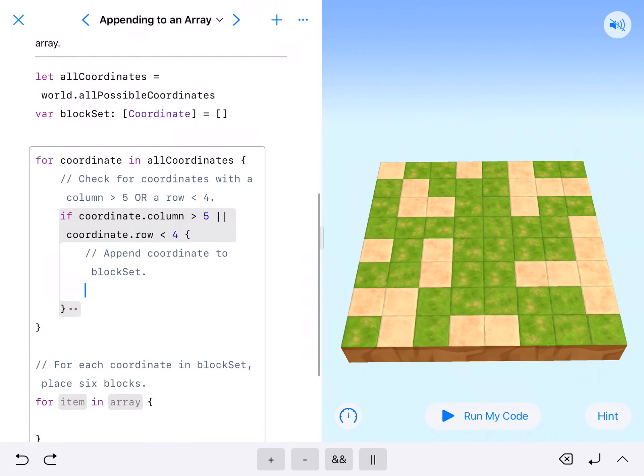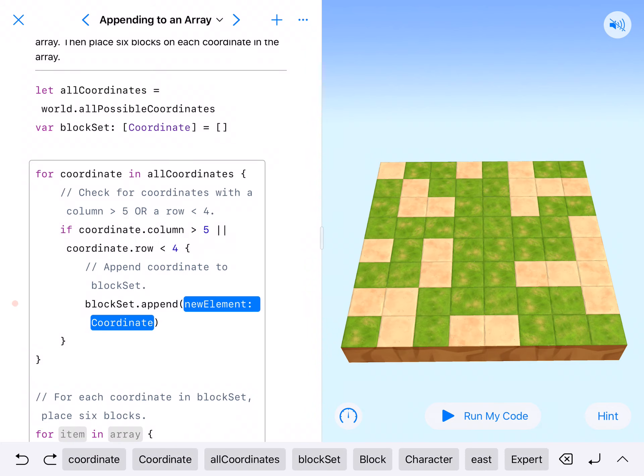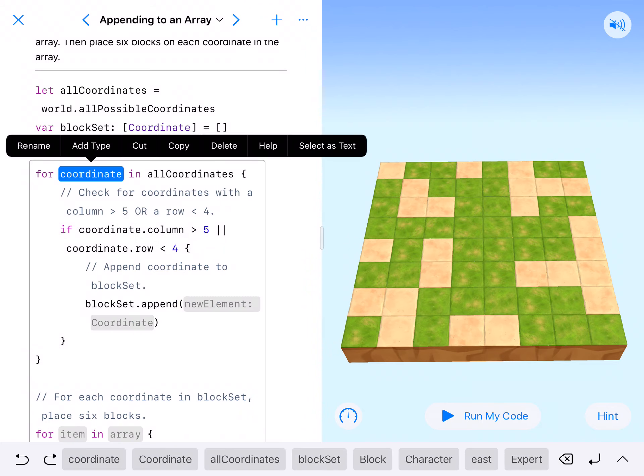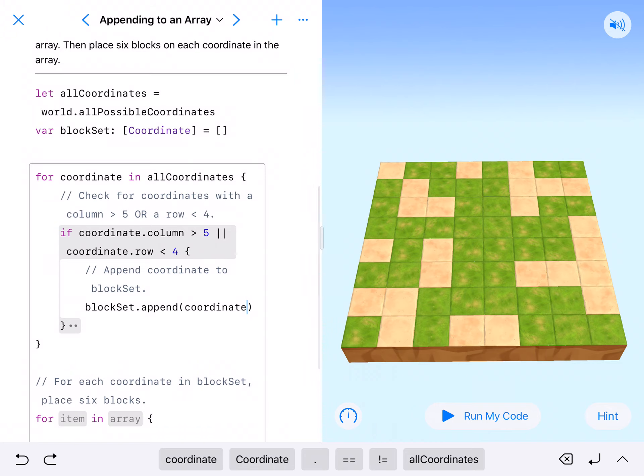And then it says append block set. So we're just going to take our array block set dot append. And then we're going to append whatever it was. We're going to append it in our name for our loop. So our loop name is coordinate. So we're going to append this in coordinates. And this is going to get a little bit tricky.